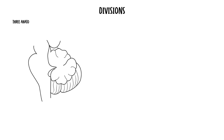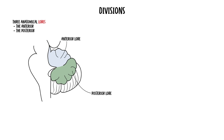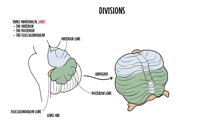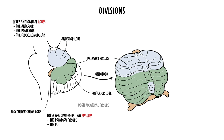The cerebellum can be divided into three anatomical lobes: the anterior lobe, the posterior lobe and the flocculonodular lobe. These lobes are divided by two fissures — the primary fissure and the posterolateral fissure.